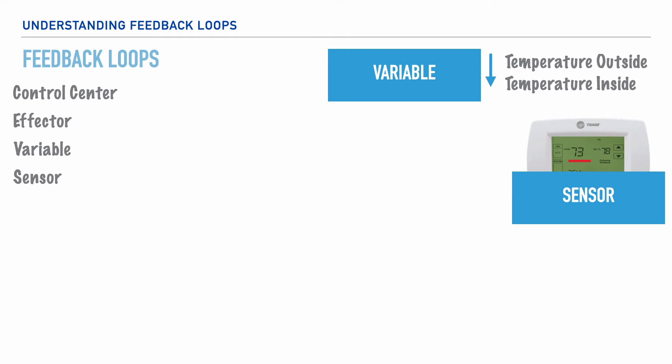What happens next is that the thermometer confers with the thermostat. And the thermostat has a set point value or a preferred temperature, which in this case is 78 degrees. And because this is the set temperature, we call it the control center.